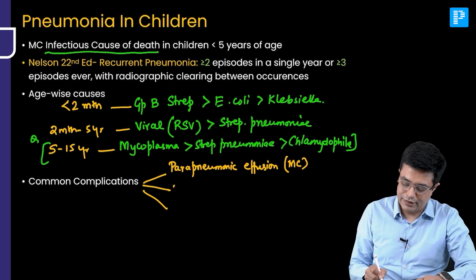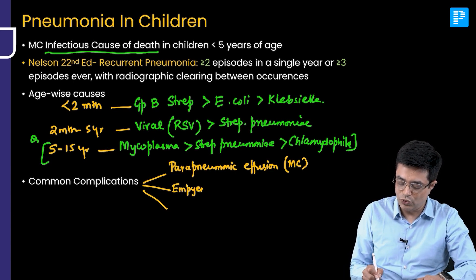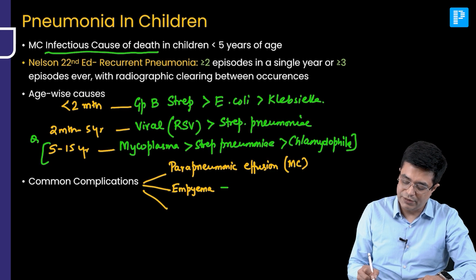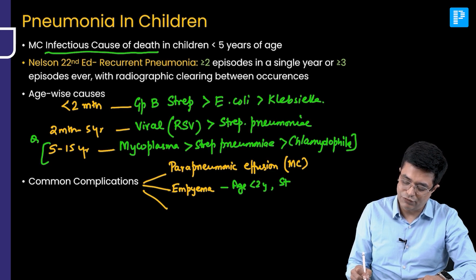The second complication is empyema, which refers to pus in the pleural cavity. Empyema is common in children less than two years of age and is mostly caused by Staphylococcus aureus as the offending pathogen.